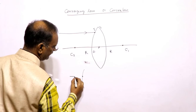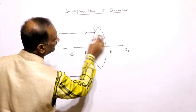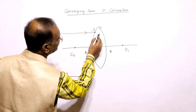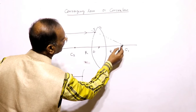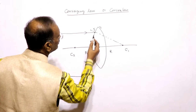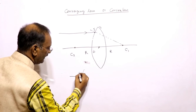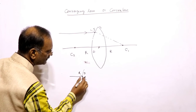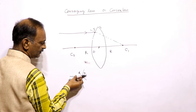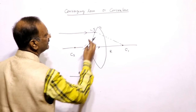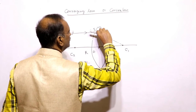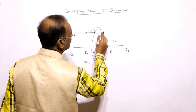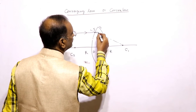At the surface when the ray is incident, we draw the normal with respect to the center of curvature. From rarer to denser medium, the ray will try to bend towards the normal. Instead of going straight, it will bend towards the normal.